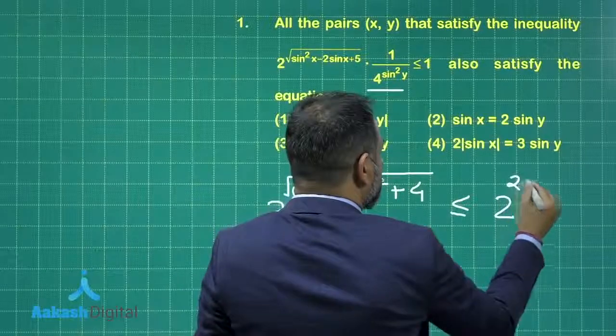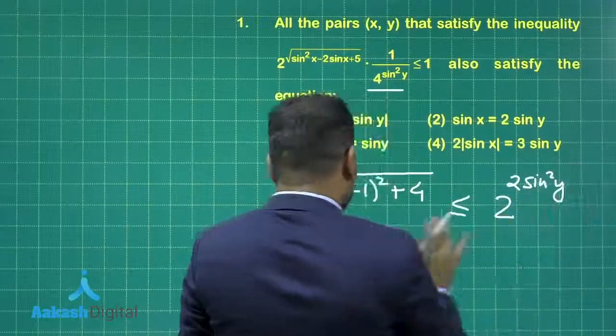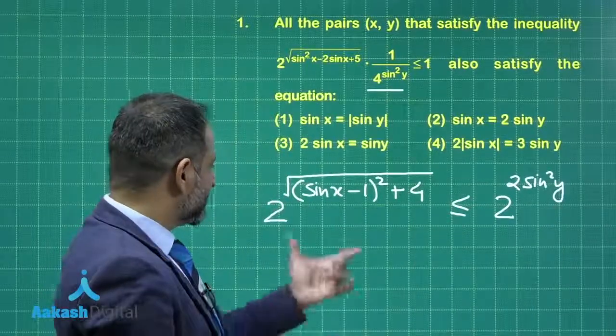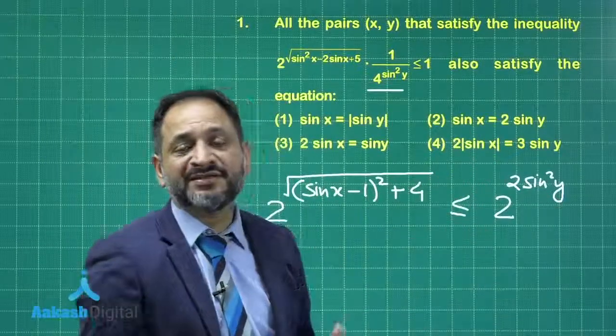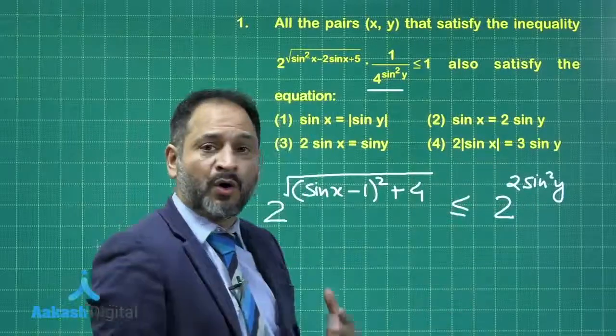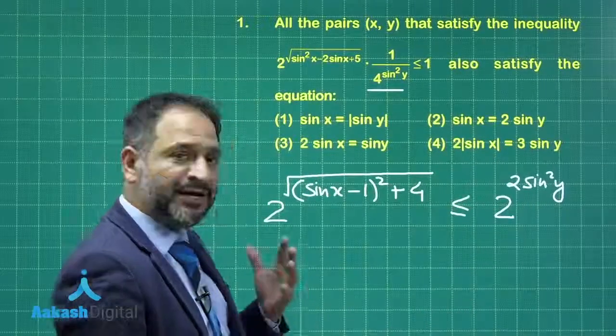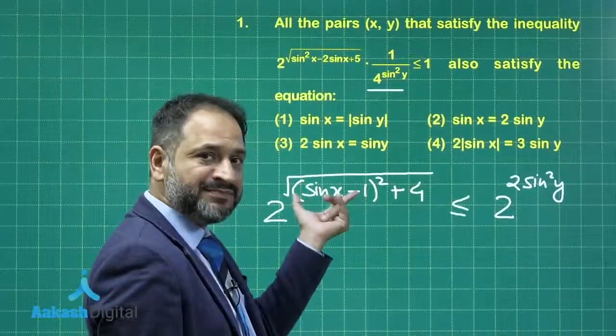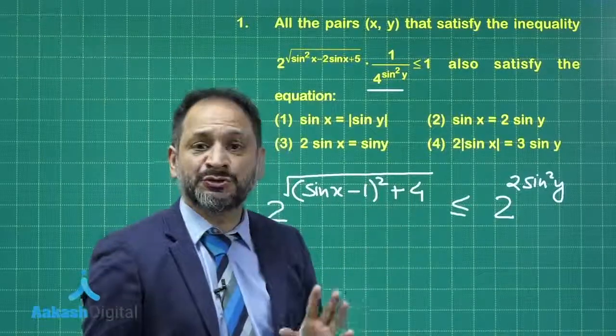This is 2 raised to the power 2 sin squared y. Now you can notice a very important concept here that this term has to be less than this term. The minimum value of this term is when this term becomes 0. That is, the minimum value of this term is equal to 2.